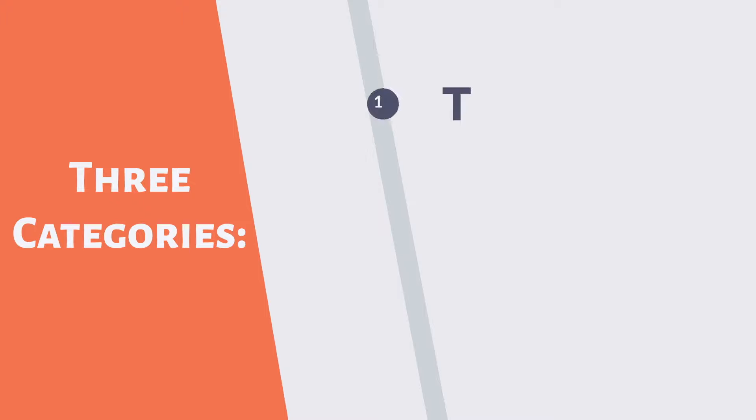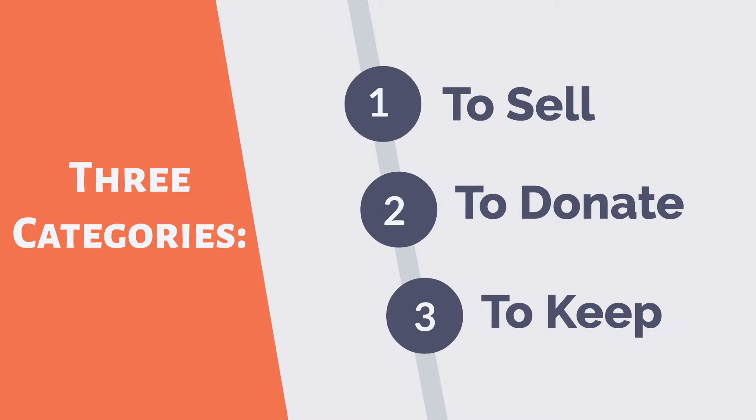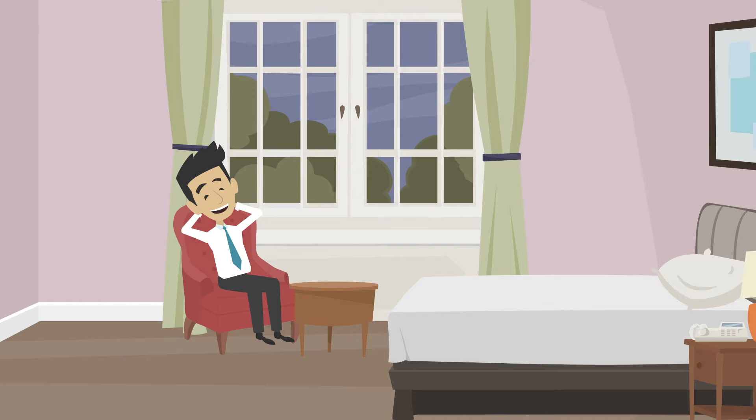Try to decide things in three categories: to sell, to donate, and to keep. This way, you can easily know at the end of the day which is which, and you will feel much better after you've done this.